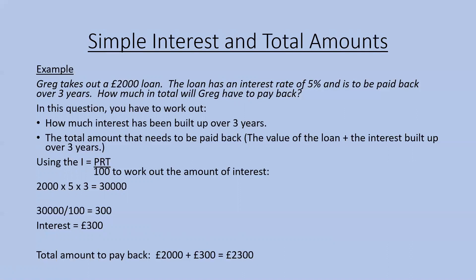To begin with, we use the formula I equals P times R times T divided by 100. Replacing P with 2,000, R with 5, and T with 3: 2,000 times 5 times 3 equals 30,000. Dividing by 100 gives £300 in interest. We then add that £300 to the £2,000 loan, so the total amount that needs to be paid back will be £2,300.